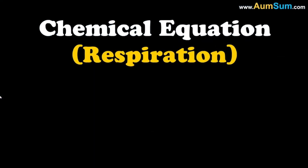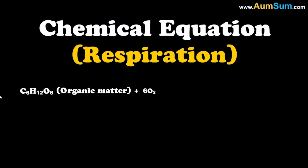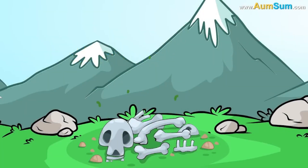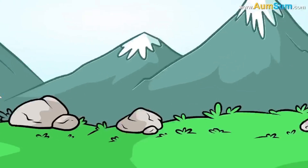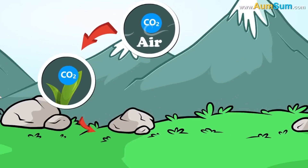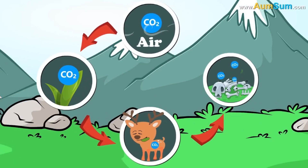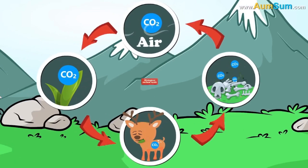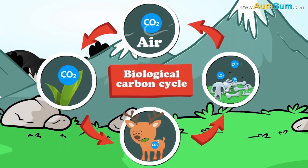This is the chemical equation of respiration. Also, when plants and animals die, they start to decay. Decomposers act on the dead organic matter, releasing carbon dioxide. Thus, the carbon content that was taken in by the organisms is released back into the atmosphere, marking the end of one biological carbon cycle.